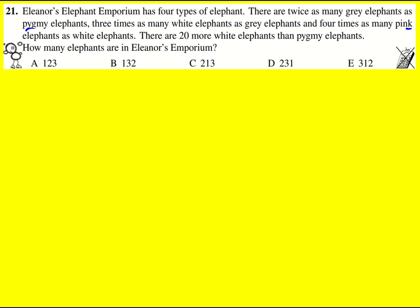So that means that, I've got to be careful here, twice as many grey elephants as pygmy, so that must mean that G for the number of grey elephants is going to be equal to 2 times Y.